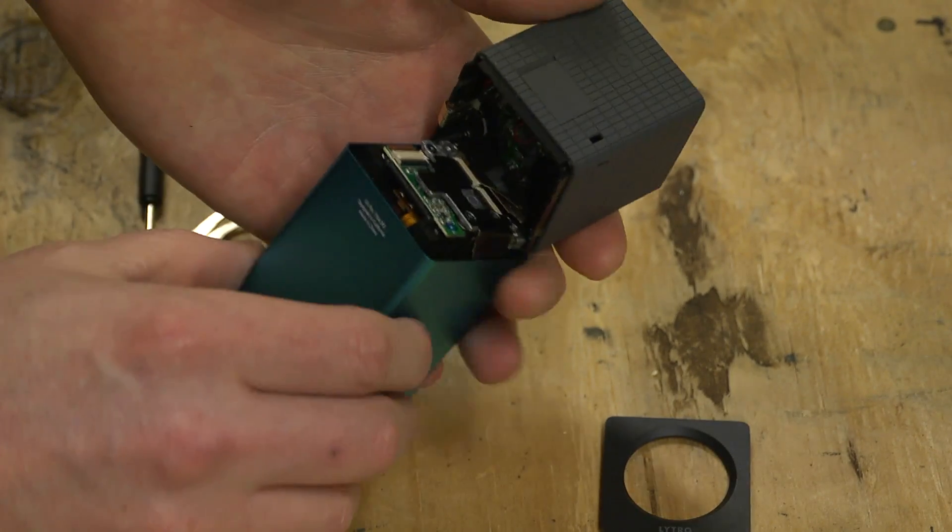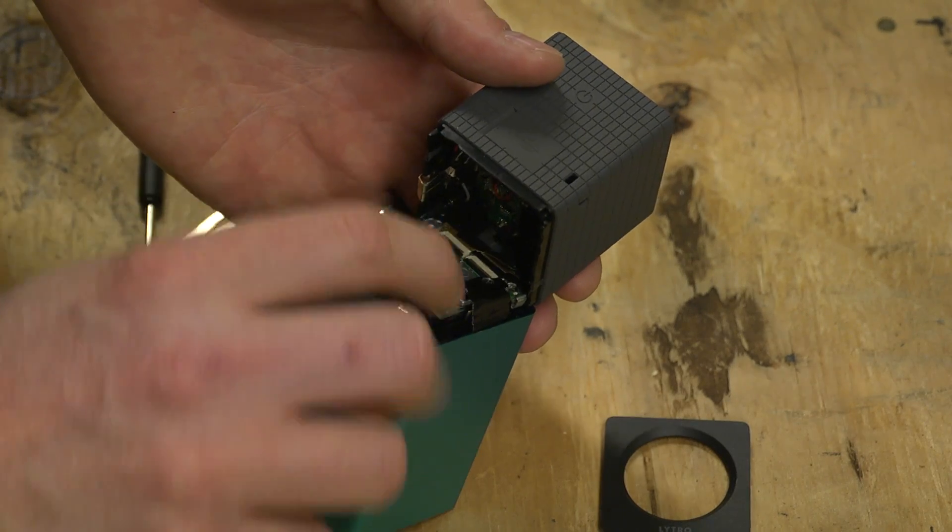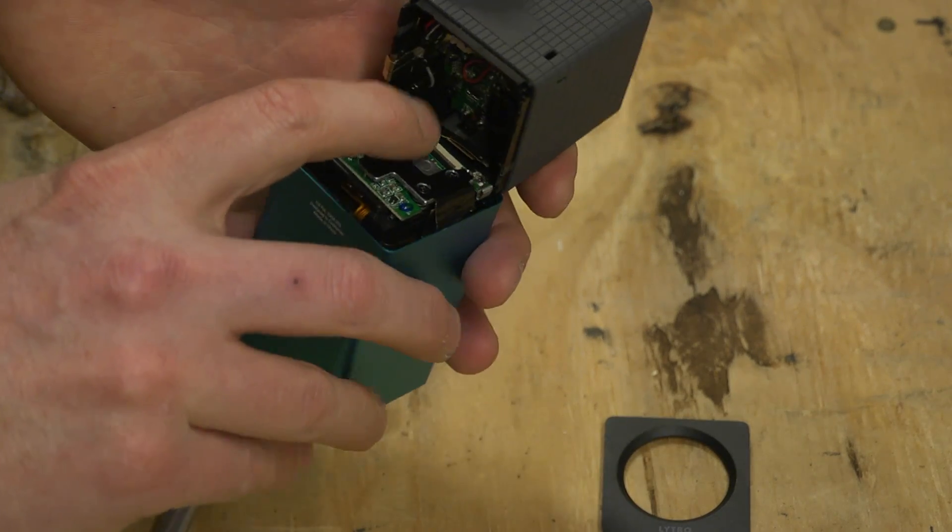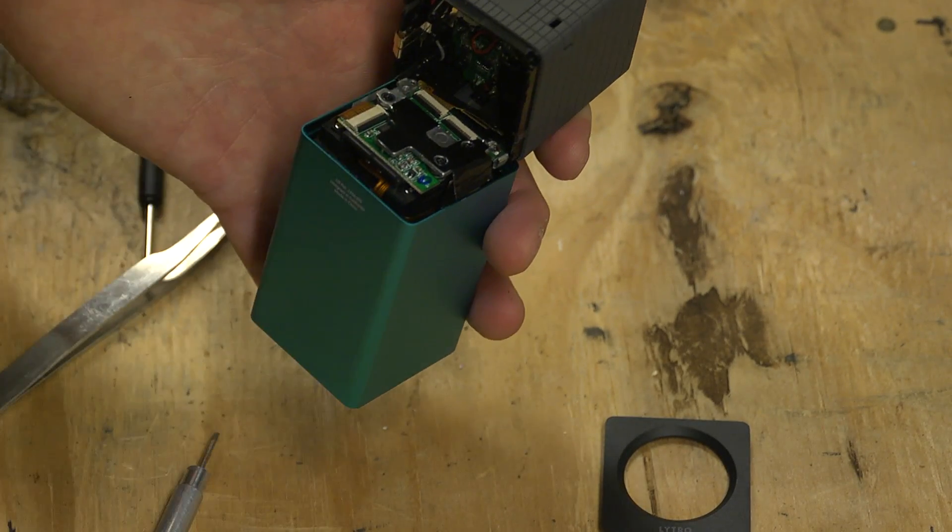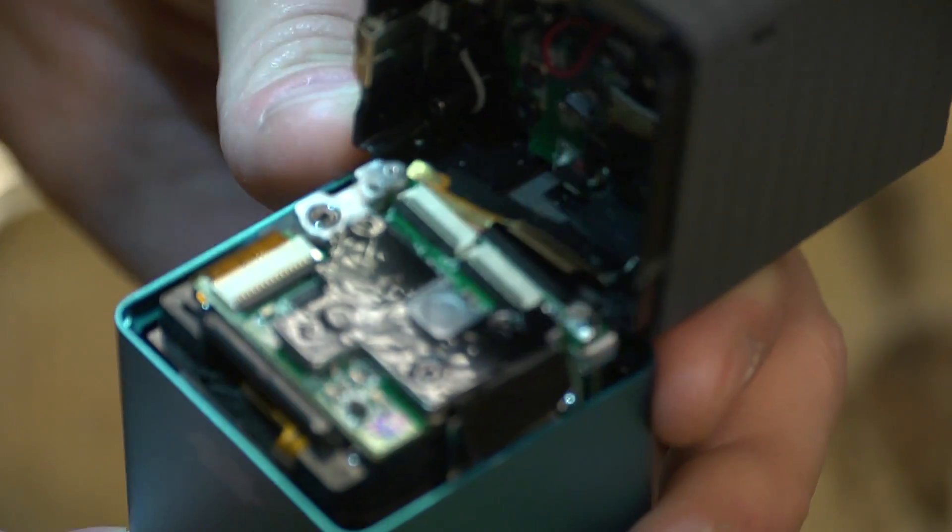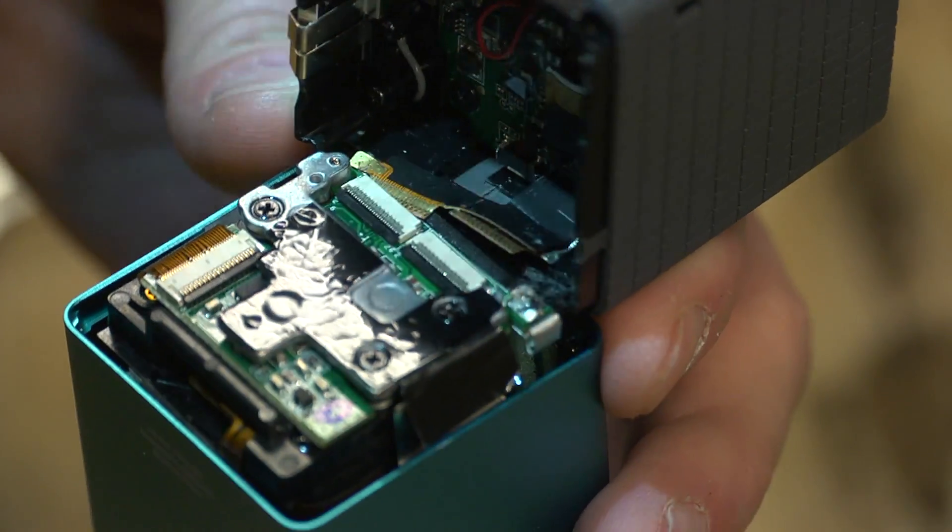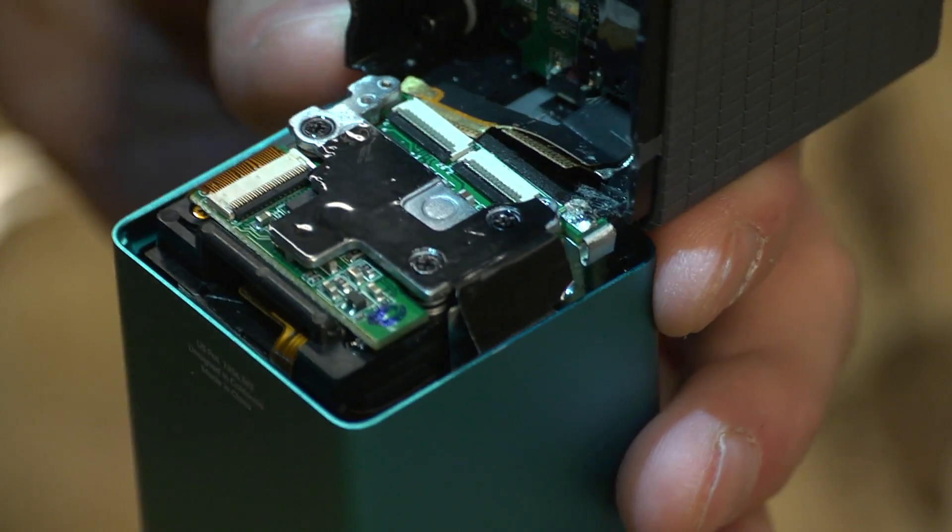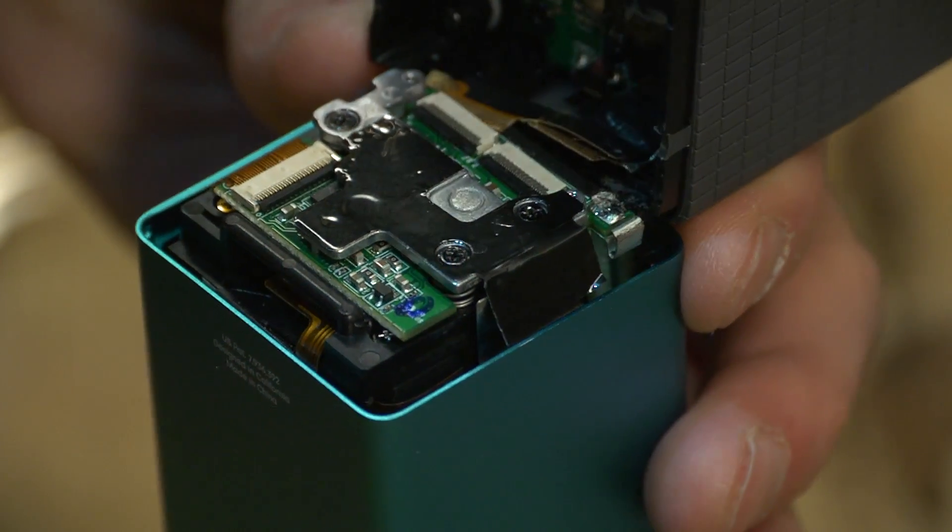That will be about as far as you can open it without taking apart these little ribbon cables. So this is the actual inside of the two halves.